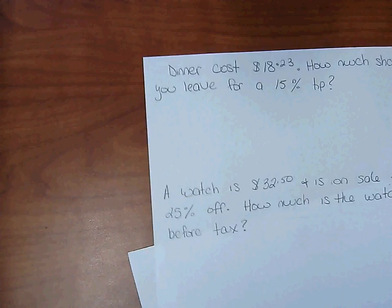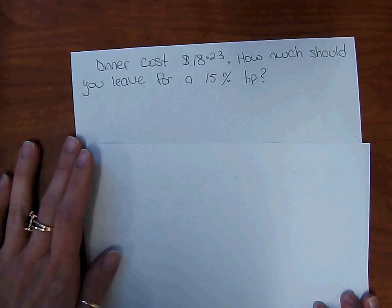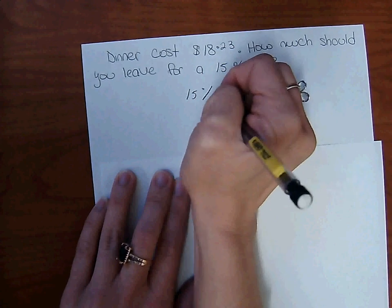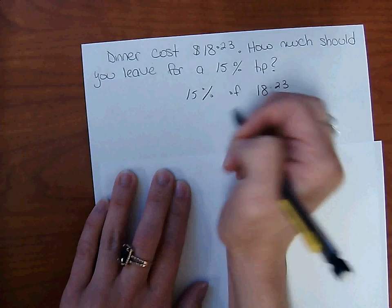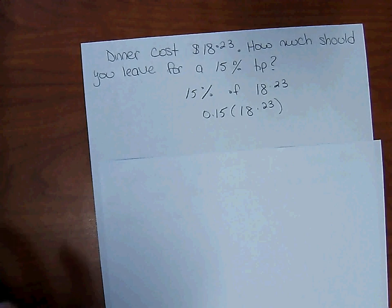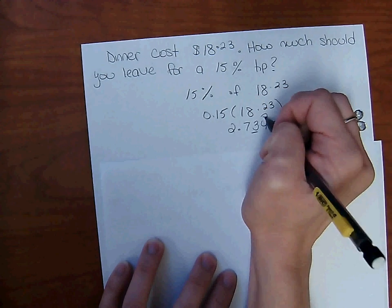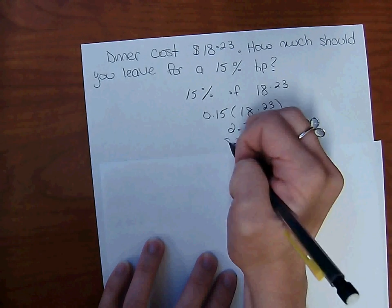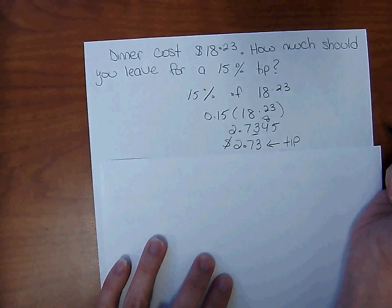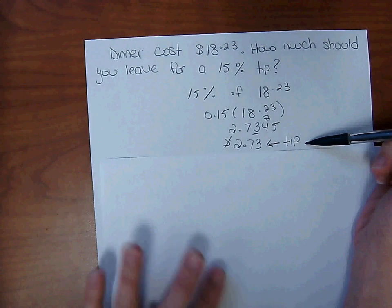Dinner costs $18.23. How much should you leave for a 15% tip? Tip is something added to your total, so we're going to figure out 15% of $18.23 — percent of a number — so 0.15 times 18.23. This is money, so round to the nearest penny. The next digit is a 4, so we keep it the same: $2.73. This represents the tip we should leave. Our question is how much tip should you leave, so we do not need to go any further to figure out the total.